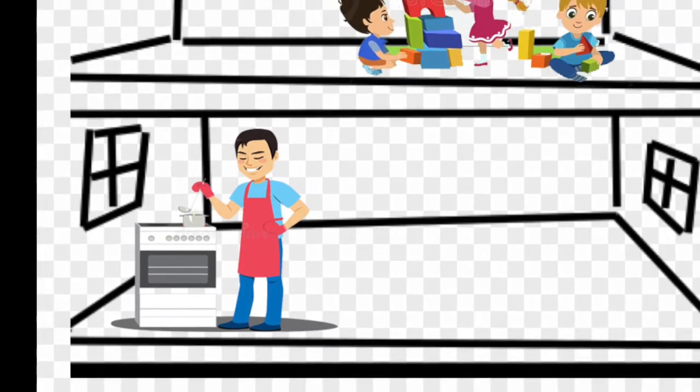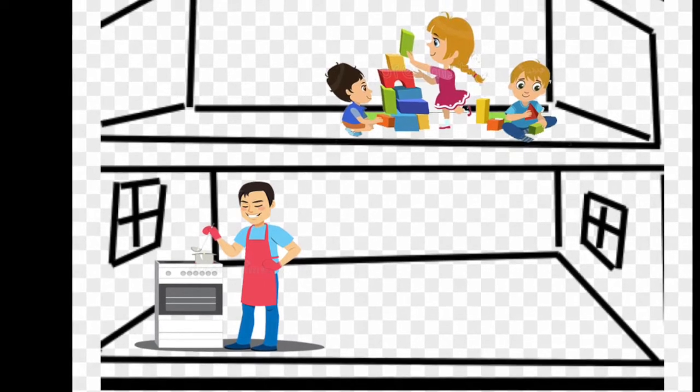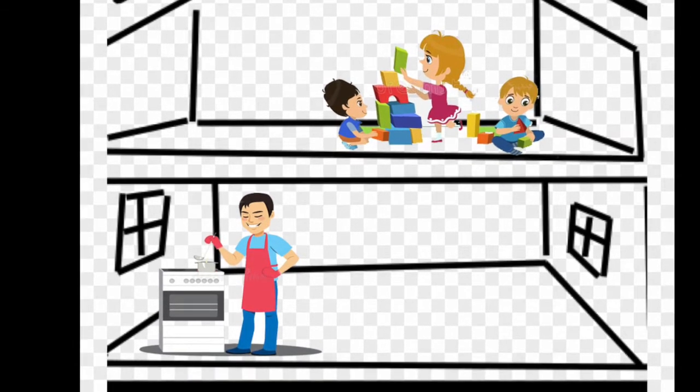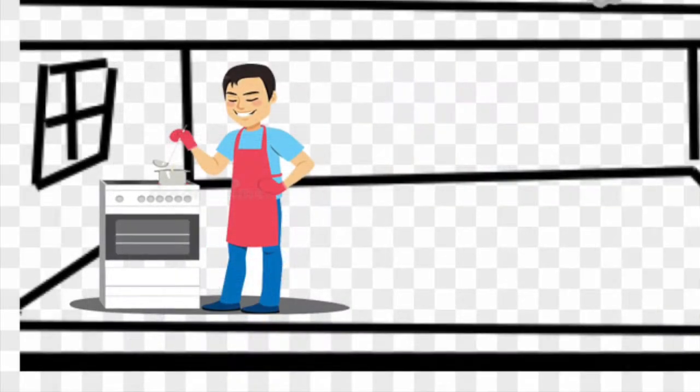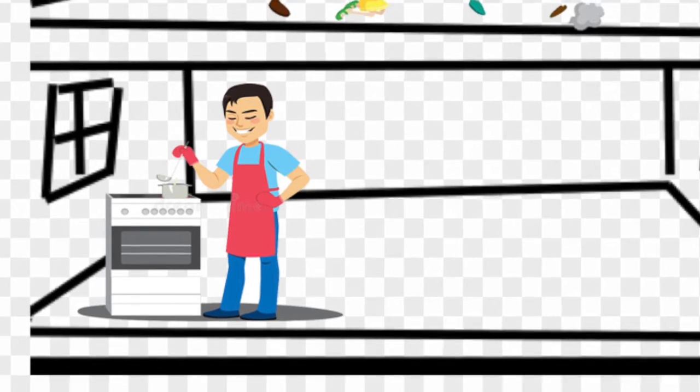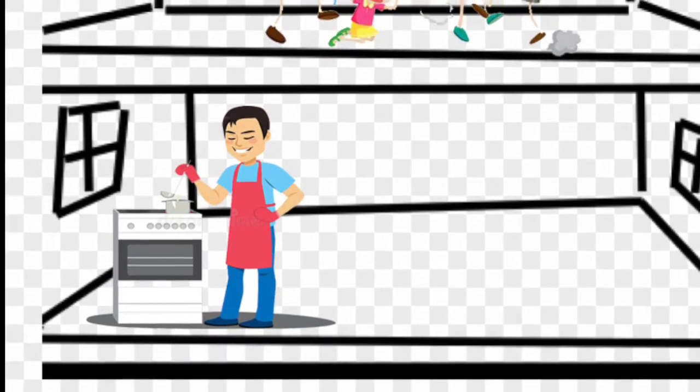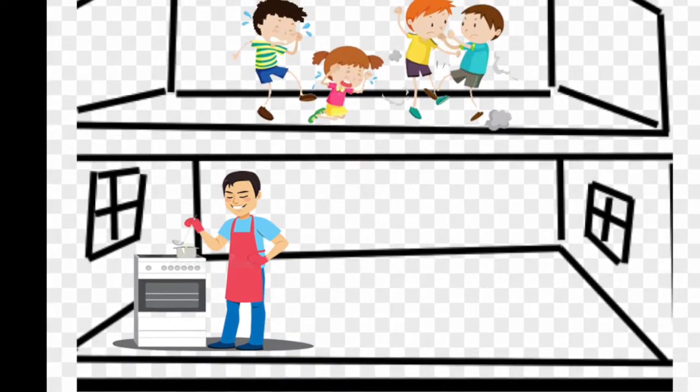Here is a dad cooking dinner for his children who are playing upstairs. Although he cannot watch the kids every moment, he can perceive a lot about their health and welfare based on the sounds that they make. If he hears laughter, this would likely be perceived as a positive welfare indicator. But if he hears crying, he might perceive that differently and could potentially check on the kids or mitigate the situation.